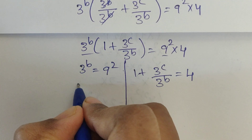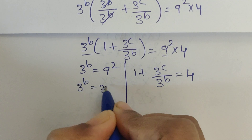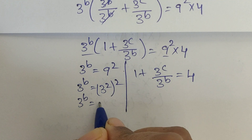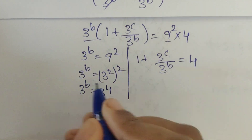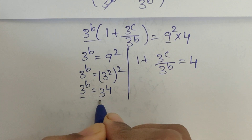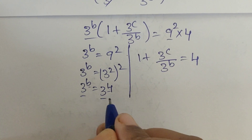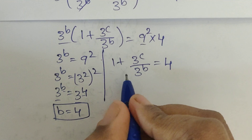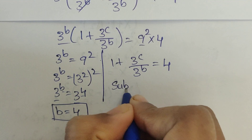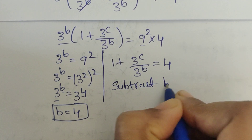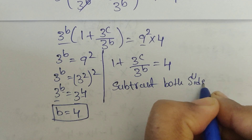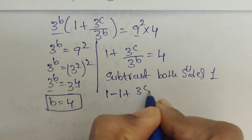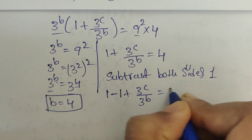So here 3 power b equal 9 squared — we can write this as 3 squared whole to the power of 2. So 3 power b equal to 3 power 4. Compare these two terms: same base, different exponents, so b equal 4. So we got b equal to 4. Coming to this equation, subtract 1 from both sides. So now it will be 1 minus 1 plus 3 power c divided by 3 power b equal 4 minus 1.